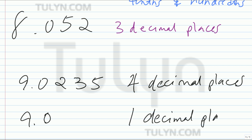Because even though there's a 0, that doesn't mean it's not a decimal place. As long as there's a number — whether it be 0, 1, 2, 3, 4, 5, 6, 7, 8, or 9 — it is a decimal place. And that concludes it for decimal places.